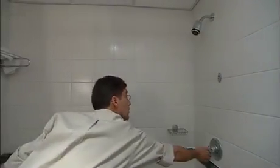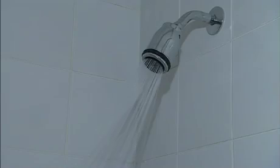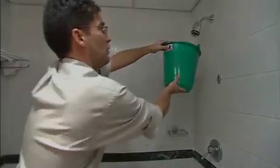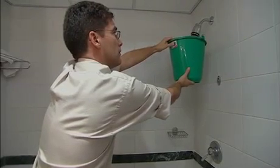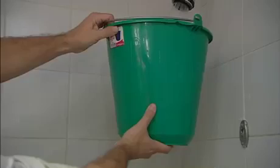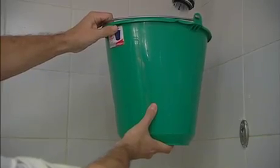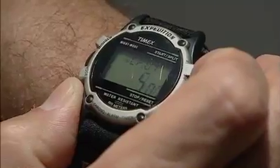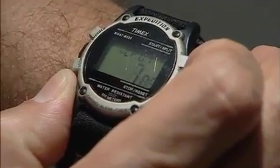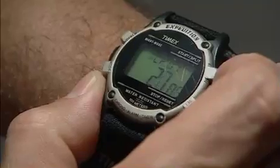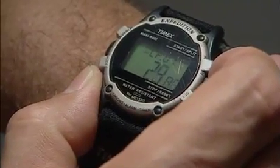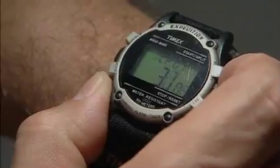First, turn on the shower or faucet at full flow. Second, place a container of known volume under the fixture and measure how much time it takes to fill with water. Then, calculate the flow by dividing the volume of the container in litres by the number of minutes it took to fill it. Here, the shower flow filled a 10-litre bucket in about half a minute, which means that the shower head has a maximum output of 20 litres per minute.